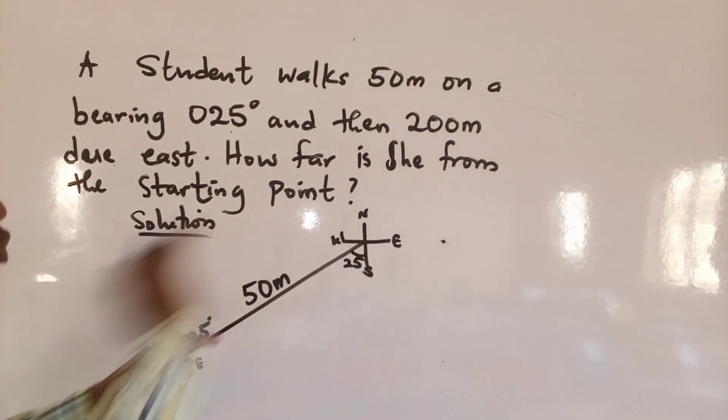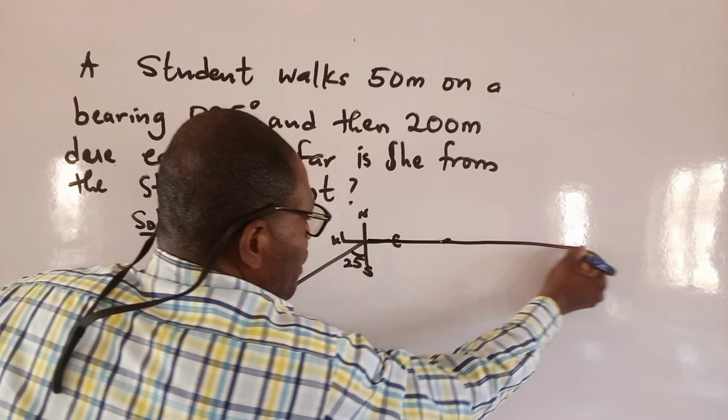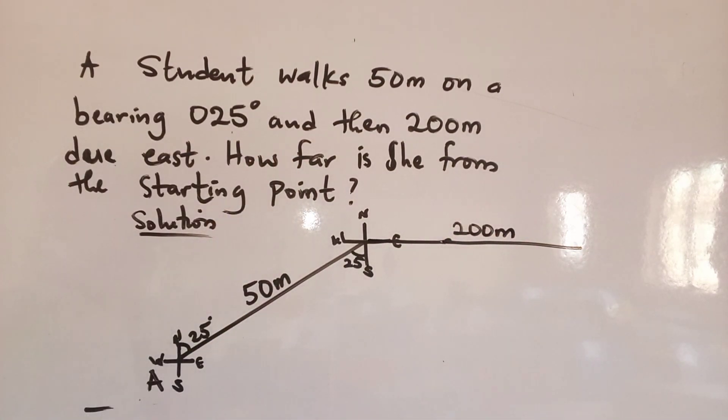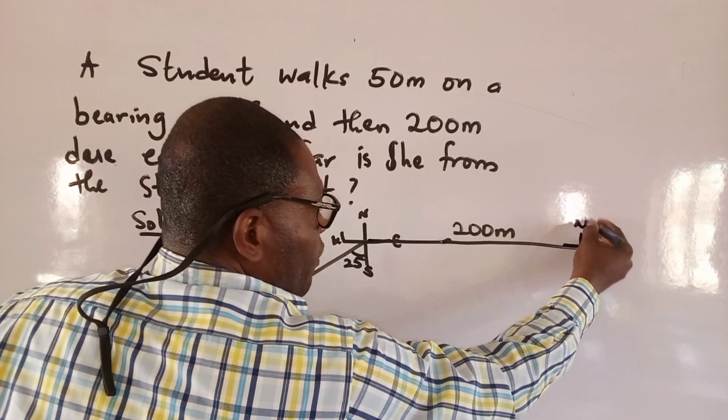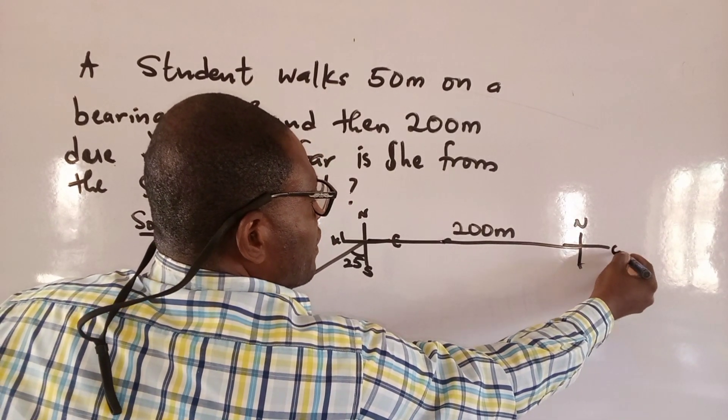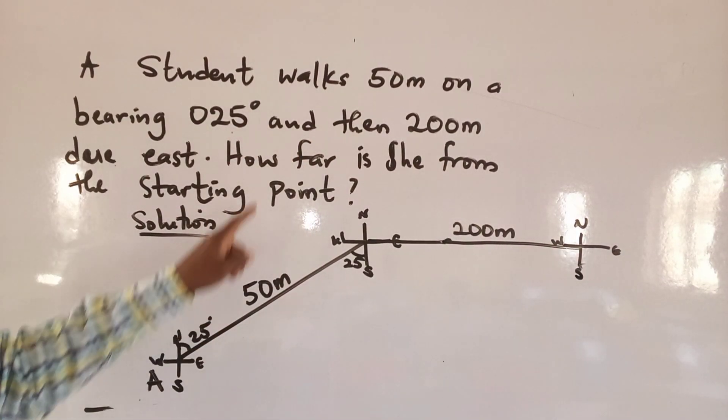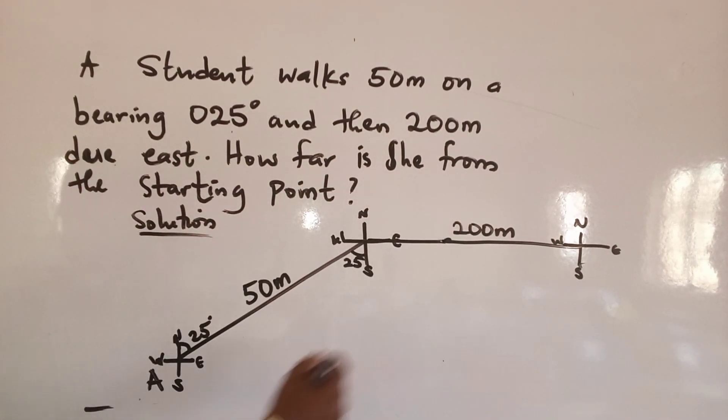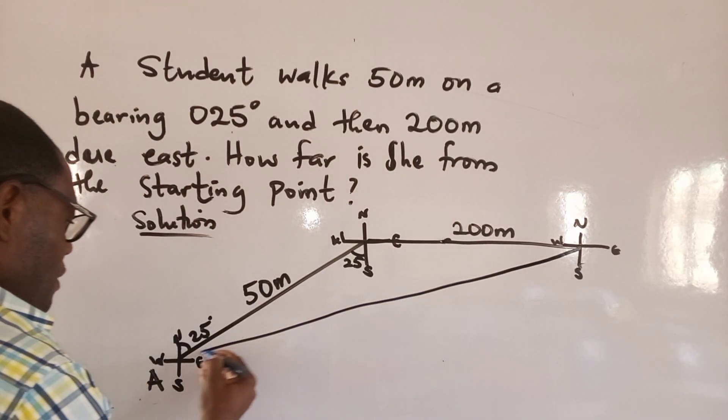And then 200 meters due east. Draw a line going this way. Let's assume that this is 200 meters. Then we're going to hit another point with north, east, west, and south. Now we are told how far is she from the starting point? Then you draw a line from here to hit this point.